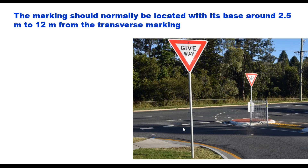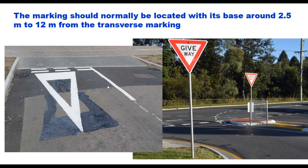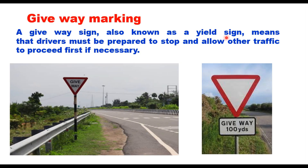The give way line is generally supplemented by a triangular give way sign and also a hollow triangular give way approach marking on the pavement. The marking should normally be located with its base around 2.5 meters to 12 meters from the transverse marking. A give way sign, also known as a yield sign, means the driver must be prepared to stop and allow other traffic to proceed first if necessary — you do not have the right of way and must yield to vehicles on the intersecting road.